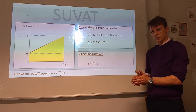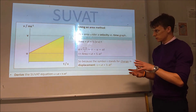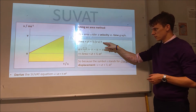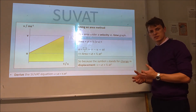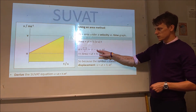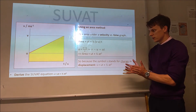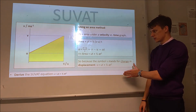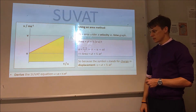To get the third SUVAT equation, we're still using our velocity versus time graph but now use a substitution method. From the previous slide, we can express the area as UT plus half T times (V minus U). Using our first SUVAT equation, V minus U equals AT, we substitute AT in for V minus U, giving area equals UT plus half AT squared. Since the area is the change in displacement, we get our third SUVAT equation: S equals UT plus half AT squared.